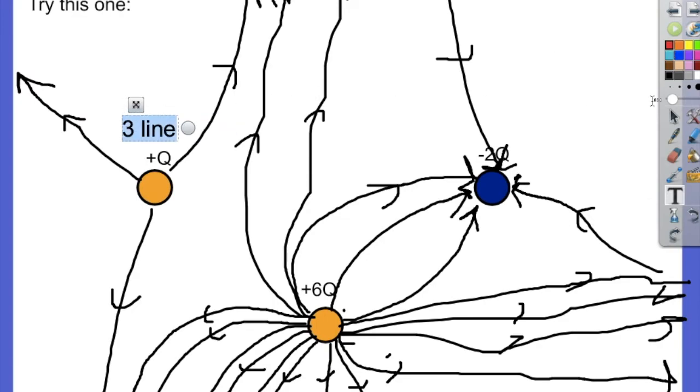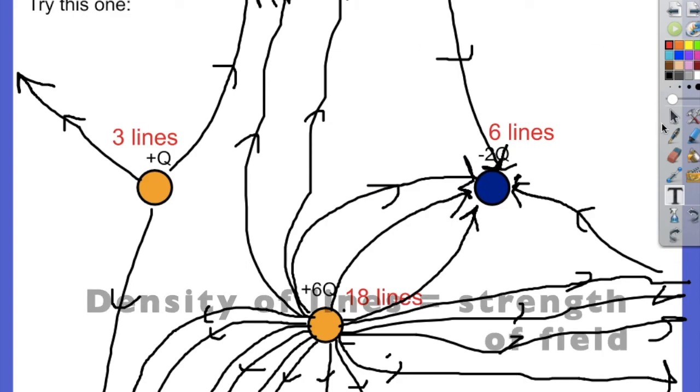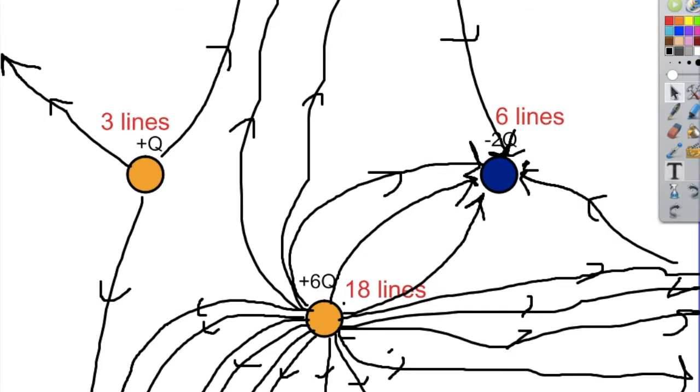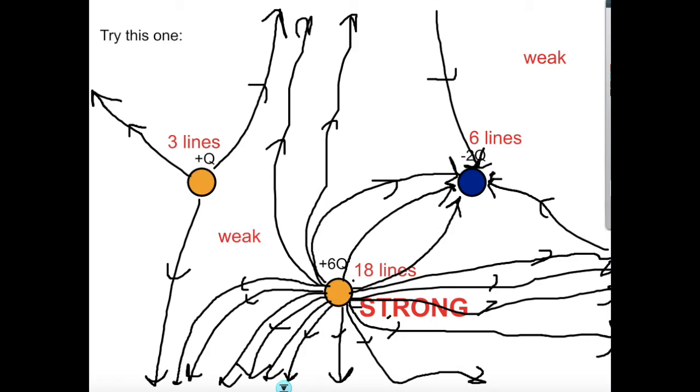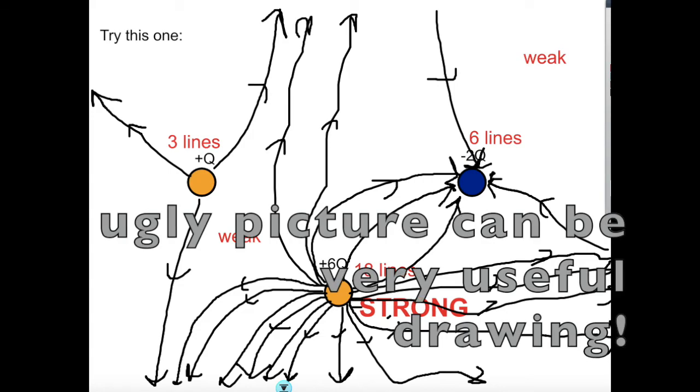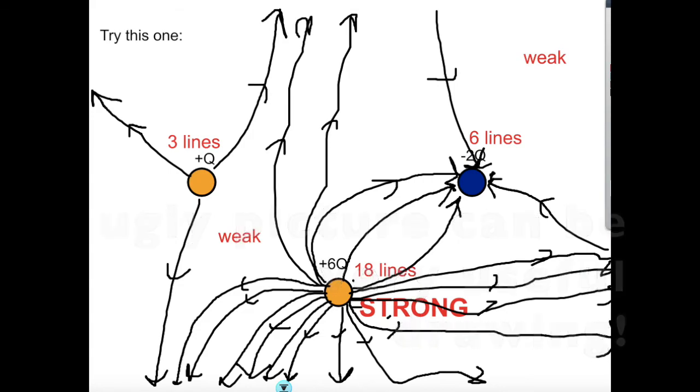So now I've got three lines coming out of the plus q charge. I've got six lines going into the negative 2q charge, twice as many charge, twice as many lines, and I've got 18 lines coming out of the plus six charge. So it satisfies the rule. And remember, the density of lines shows the strength of the field. So I can look around at my final drawing and make statements about where the field is strong and where it's weak. Where is it the strongest? It's strong right there where all the lines are, and then in the empty spaces where there aren't many lines, that's where the field is very weak. So even the simple picture, as I believe as it is, is really useful in predicting what the electric field looks like in different places near these three charges.